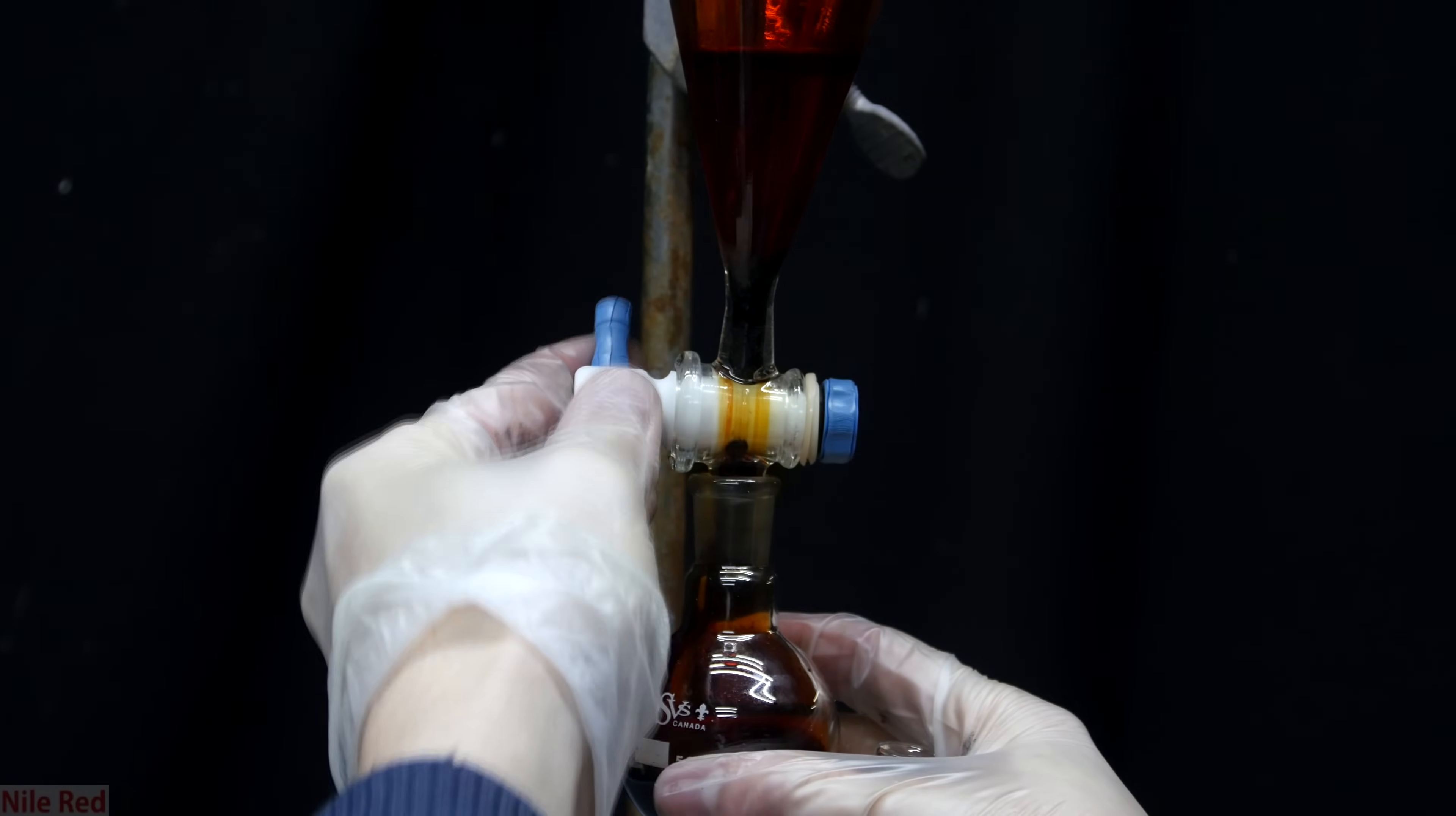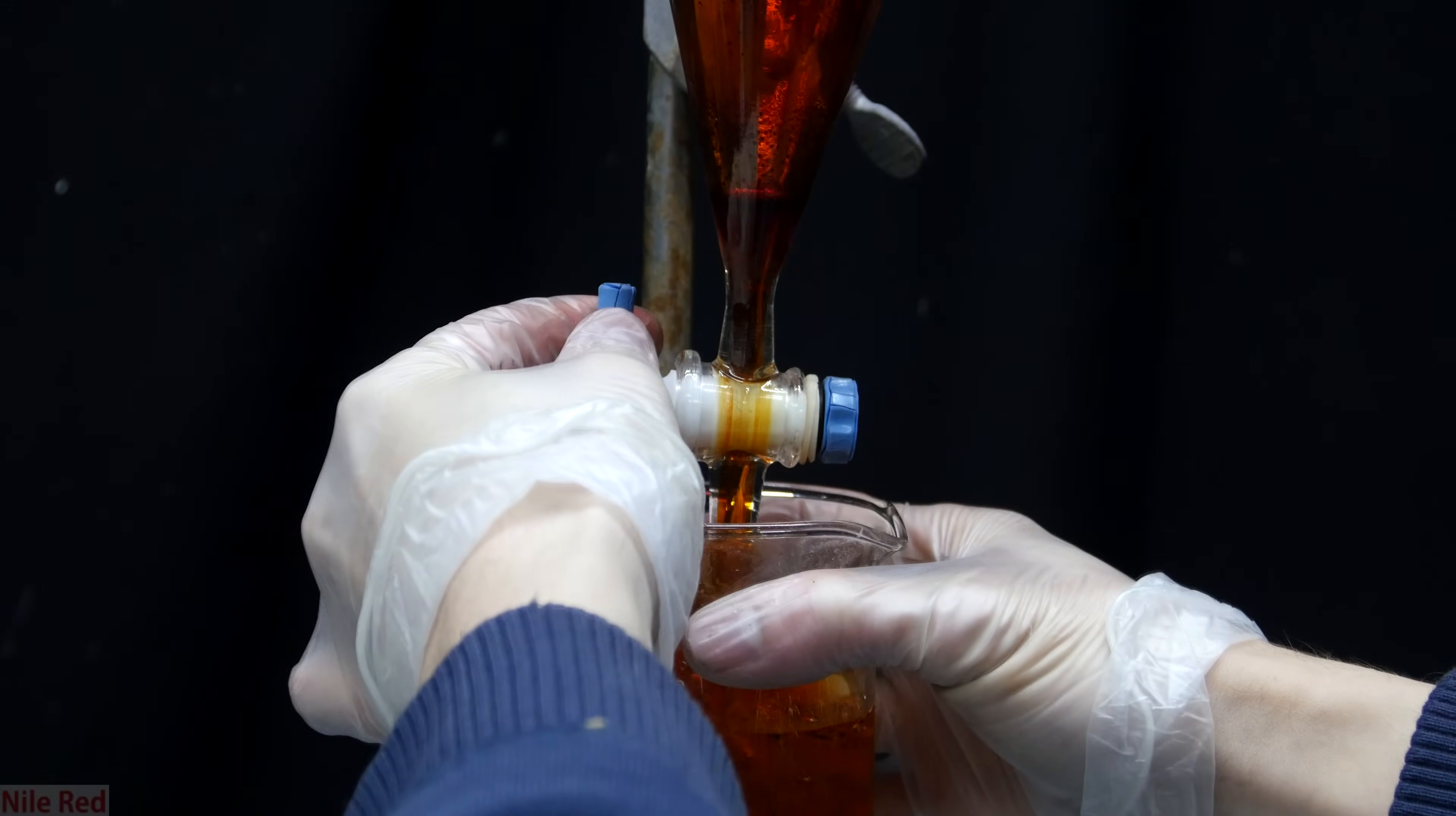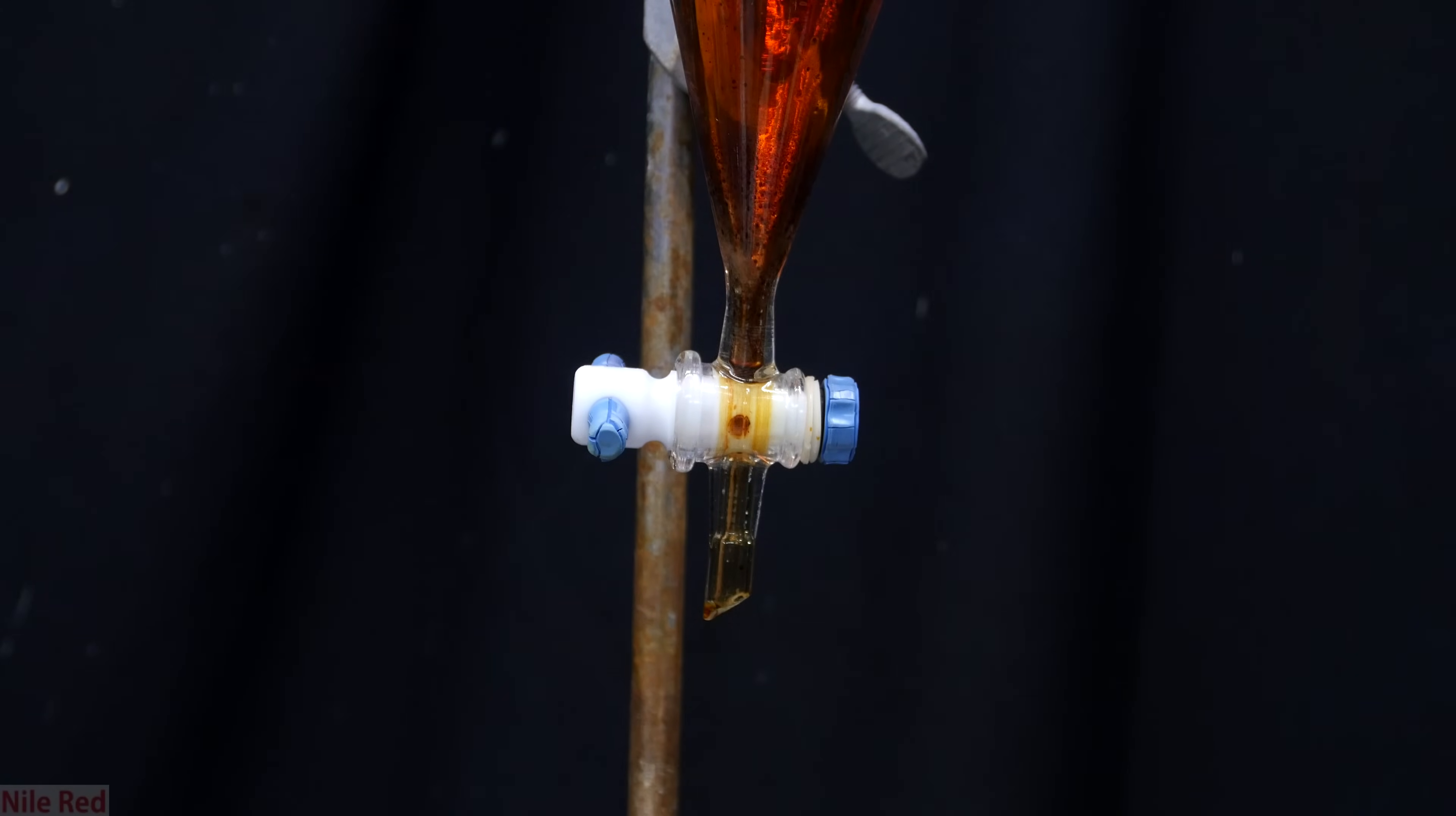Once the layers have settled, we can drain the bottom bromine layer into a round bottom flask. The top layer, which is concentrated sulfuric acid, must be drained into a beaker containing water. Afterwards, we can add sodium thiosulfate to neutralize it but it's important not to put the sulfuric acid directly into a sodium thiosulfate solution because it can react pretty strongly.